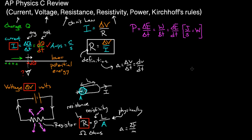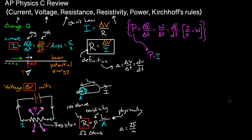Power is this quantity — energy per time. For a resistor in a circuit, the power used equals the voltage across it times the current through it: P = I·ΔV. You might wonder where this comes from — let's check.